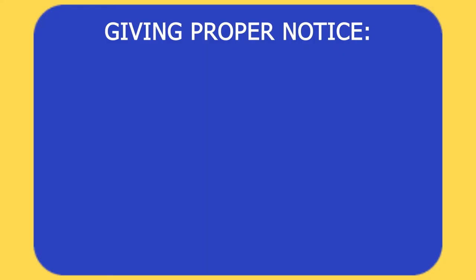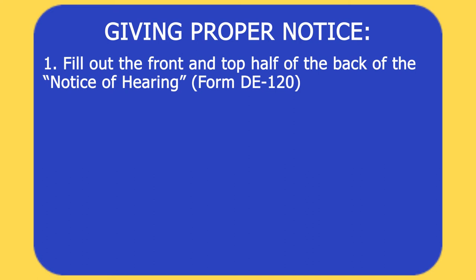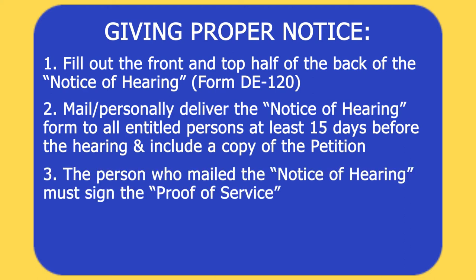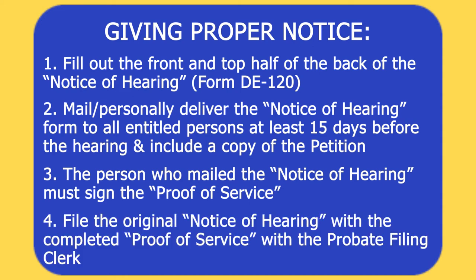After filing the final petition and receiving a court date for the final hearing, the personal representative must give notice of the hearing to all interested parties. Here's how to give proper notice. First, fill out the front side and top half of the back side of the Notice of Hearing form DE-120. Have someone who is not a party in the matter mail or personally deliver the Notice of Hearing form to each person entitled to receive notice at least 15 days before the hearing date, and include a copy of the petition. Third, have the person who mailed the Notice of Hearing sign the proof of service by mail on the reverse side of the form. File the original Notice of Hearing with the completed proof of service by mail with the probate filing clerk. Only the completed Notice of Hearing needs to be filed with the court, not the copy of the attached petition.